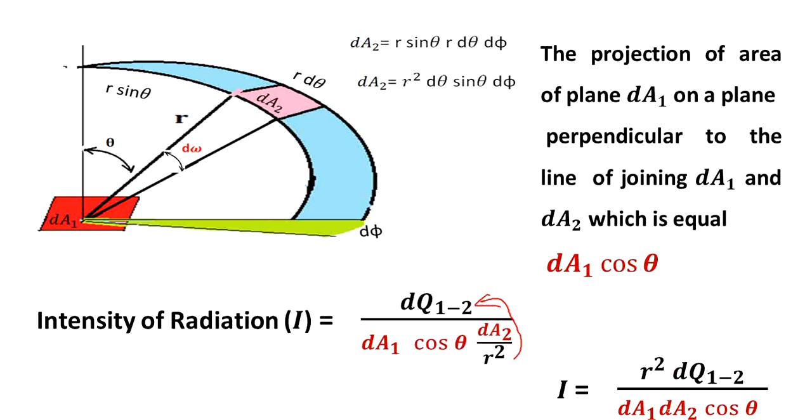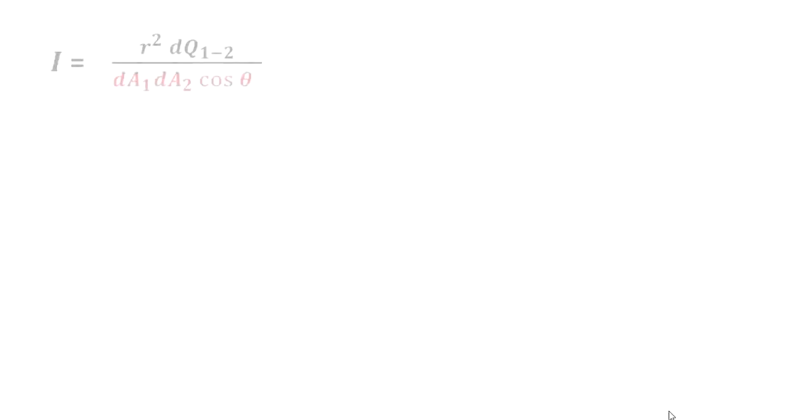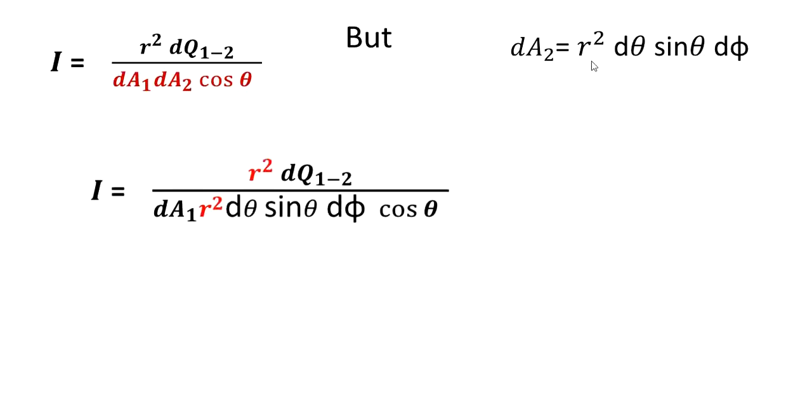Therefore, r d theta, this equation you will get. Intensity of radiation equation will be like this. dA_2, you know, r squared d theta sin theta d phi in the denominator. You put the values here.